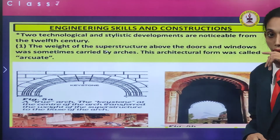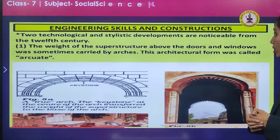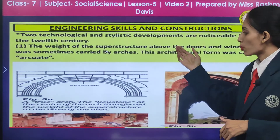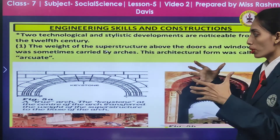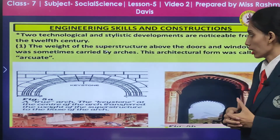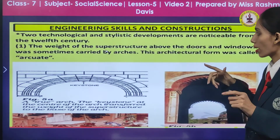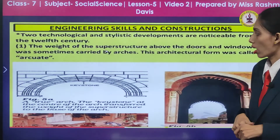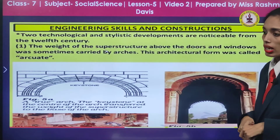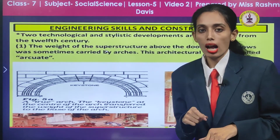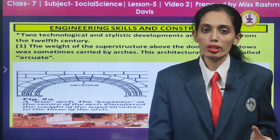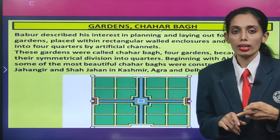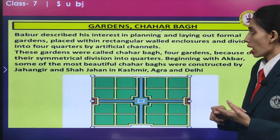Two technological and stylistic developments are noticeable in the 12th century. First, the weight of the superstructure — the heavy weight put on the beams of the vertical line — above the doors and windows was sometimes carried by arcs. This architectural form was called arcuate. So we have two types of structure: the trebate style and the arcuate style.